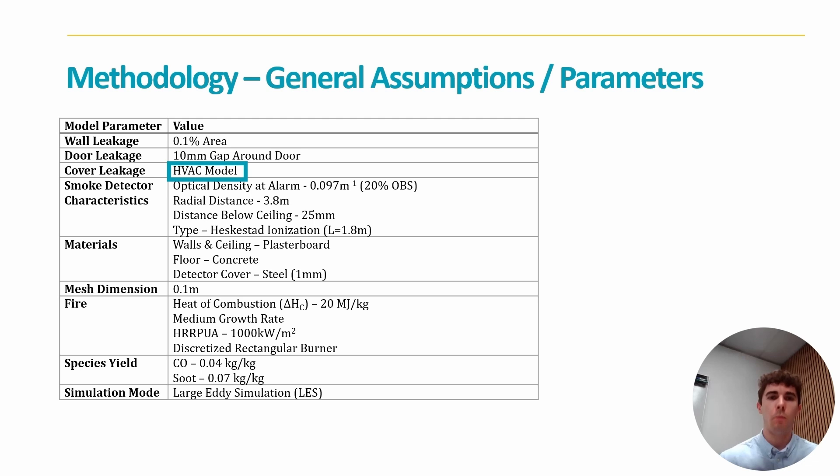So the formation of that really relied on the HVAC model of FDS, given antiligature covers can require as low as two millimeter perforations to meet requirements, which even if you account for that as a free area across the cover, generally it's too low to be resolved by a typical mesh resolution, unless you were wanting to do some pretty specific research into it. And so hence why it hasn't been looked into in industry previously. But given that the HVAC model can capture subgrid leakage, as has been verified in the FDS user guide when looking at door leakage, it was considered that this could be applied to resolving that subgrid leakage for a smoke detector cover.